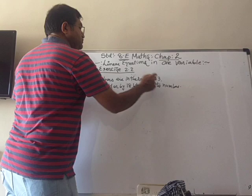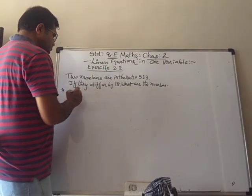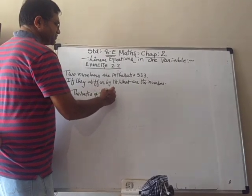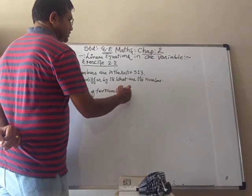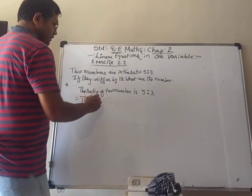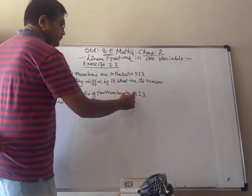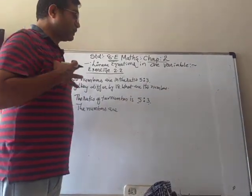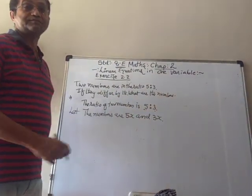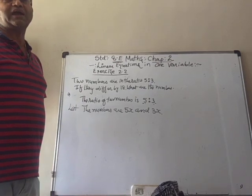Whenever numbers have a ratio, we take a variable with each part. The ratio is 5:3, so we don't know the exact numbers. We take x with each, meaning the numbers are 5x and 3x, because they can be multiples of 5 and 3.